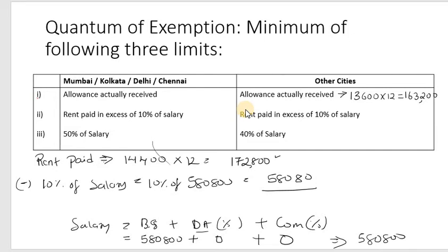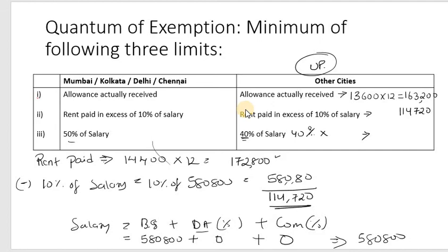10% of salary works out to ₹58,080. Rent paid per year is ₹14,400 into 12 = ₹1,72,800, and excess over 10% of salary is ₹1,72,800 minus ₹58,080. The third limit is 40% of salary for other cities, i.e., 40% of ₹5,80,800. The minimum of these three limits will be the exempt HRA amount.